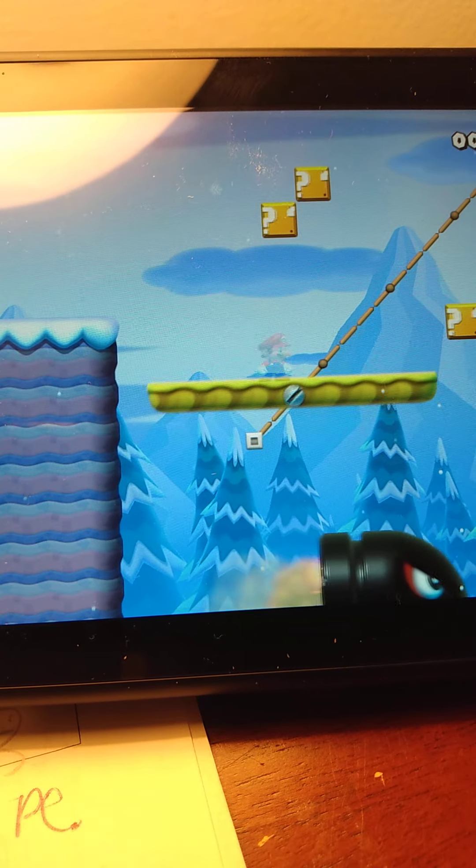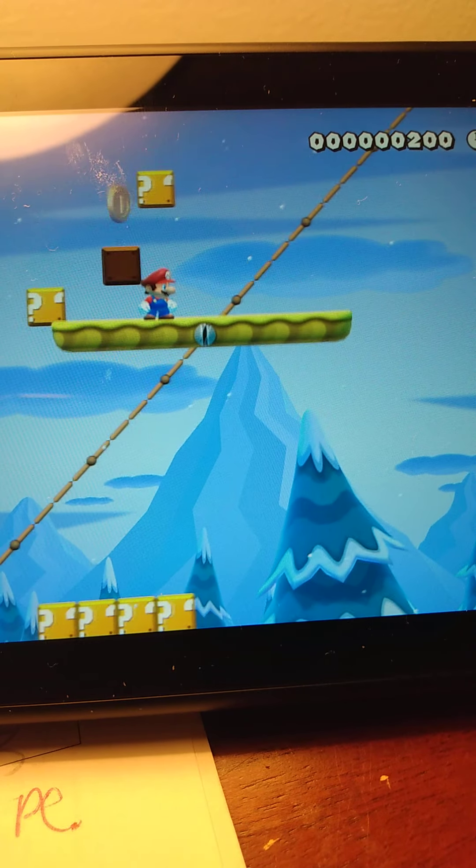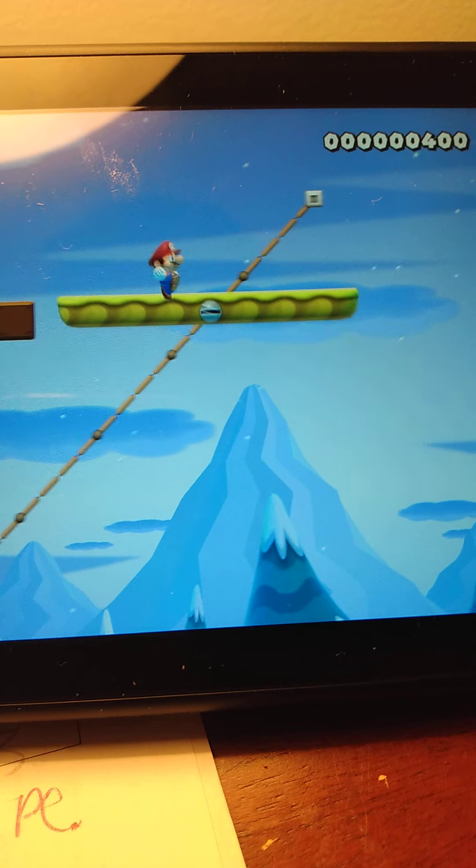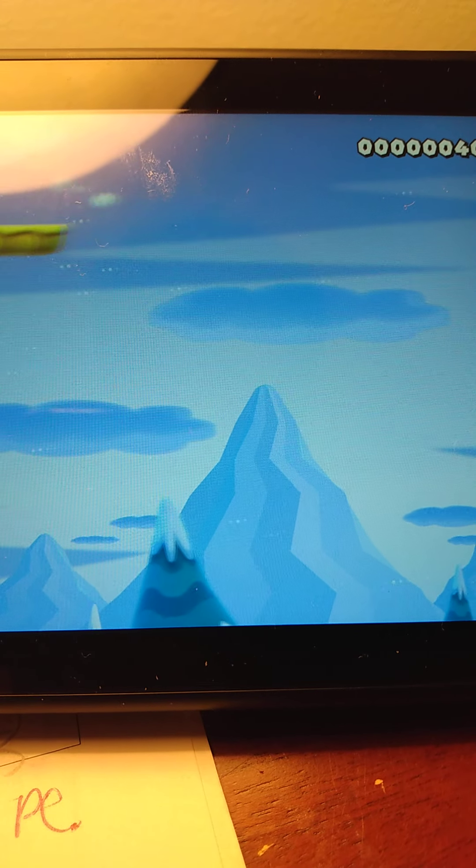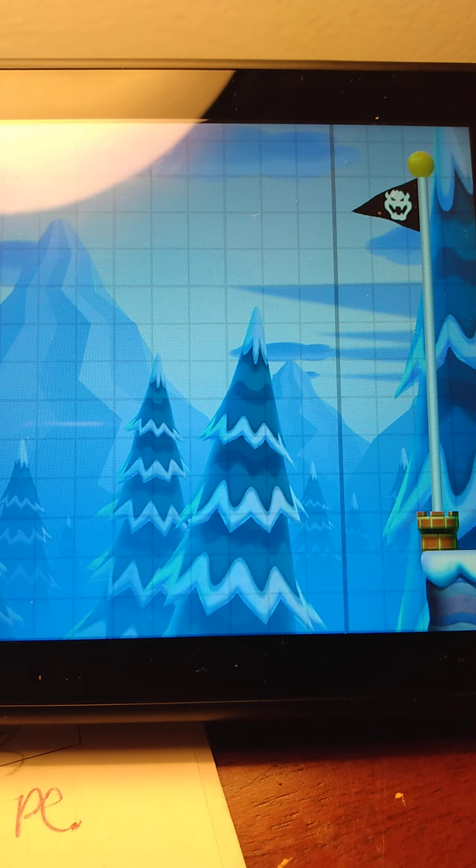So, we're in Super Mario Maker, and the slope actually looks like this. Let's see if it gets us to the goal pole. Run! Come on, come on, come on! Nope, we were close.